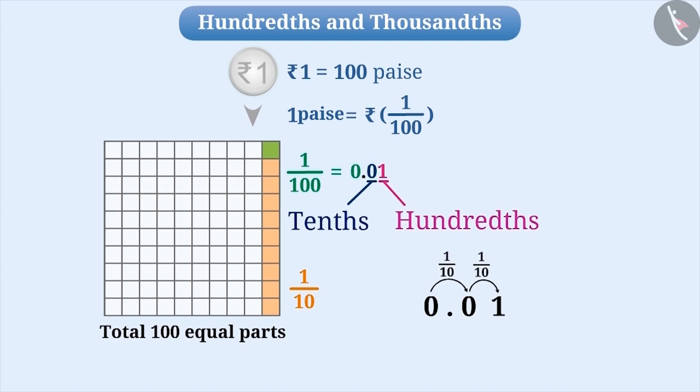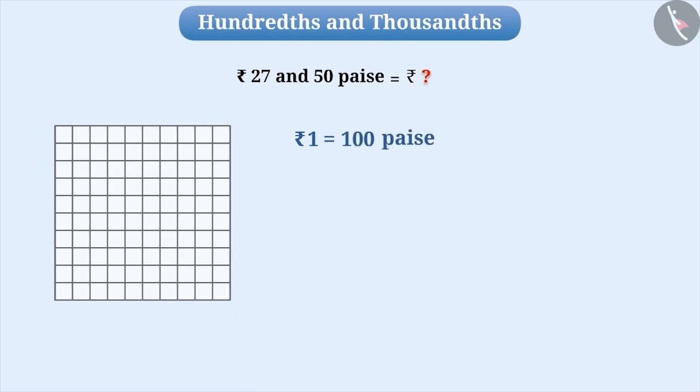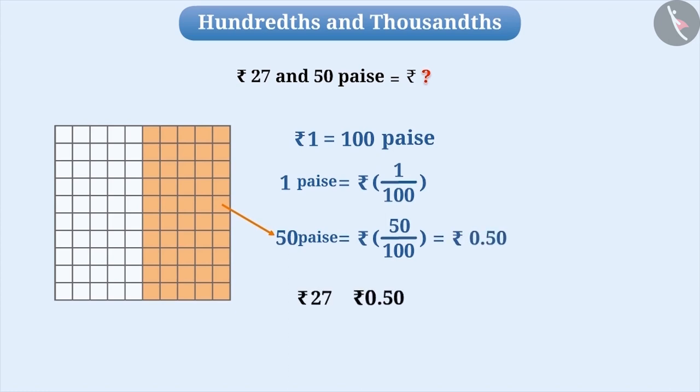Let us solve the incomplete question with this understanding. The question was, how do we express 27 rupees 50 paise in rupees? Since 1 rupee is equal to 100 paise, 1 paise is equal to 1 by 100 rupee. Therefore, 50 paise is equal to 0.50. Thus, rupees 27 and 0.50 rupee together become rupees 27.50.